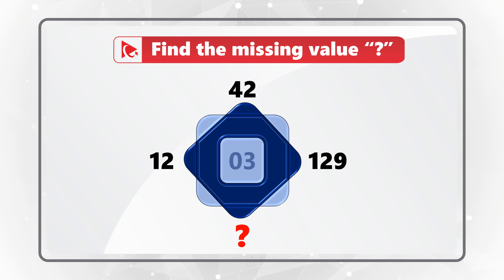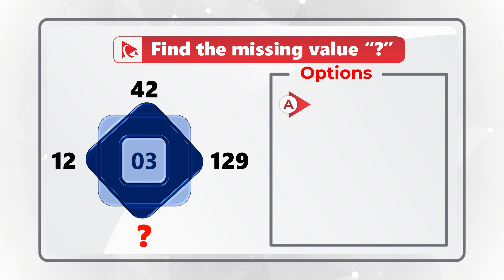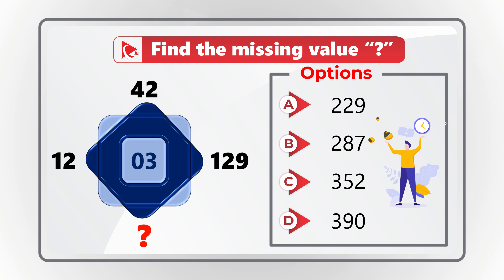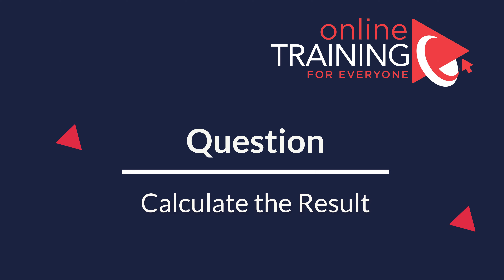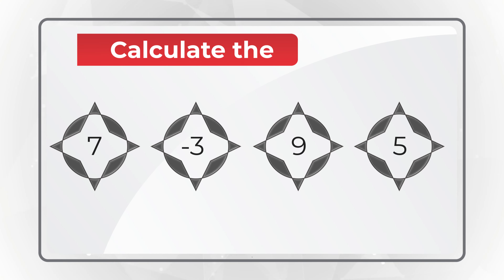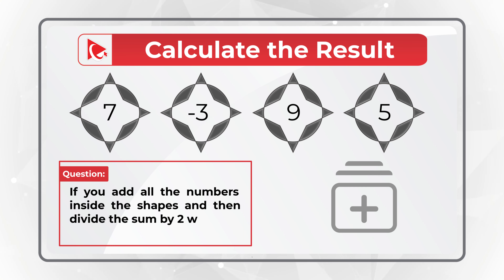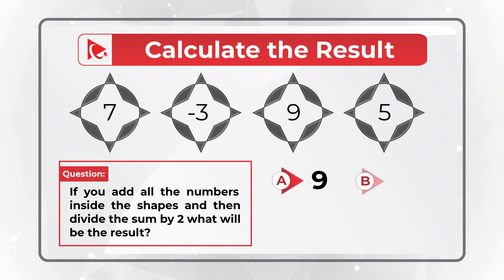Here's a practice question to test your skills. I'm not going to share the solution — instead, solve this on your own and post your answer in comments so I can give feedback. A shape contains numbers around it and one number inside: 12, 42, 129, and 3 in the middle. Choices: A) 229, B) 287, C) 352, D) 390. Recognize the pattern and post your answer!